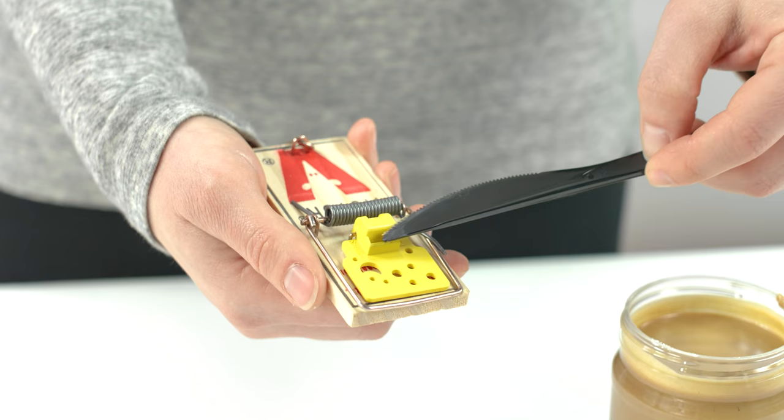Apply a small amount of bait to the yellow plastic petal. We recommend baits like beef jerky, peanut butter, or gumdrops.